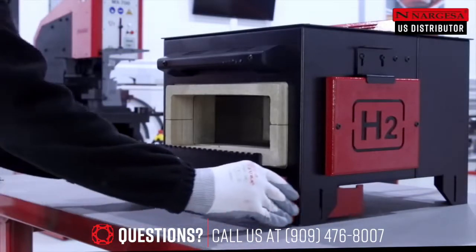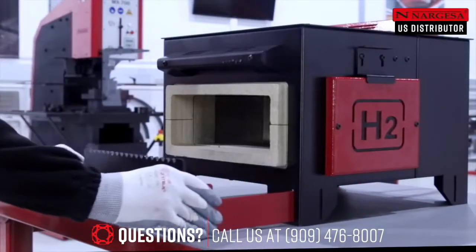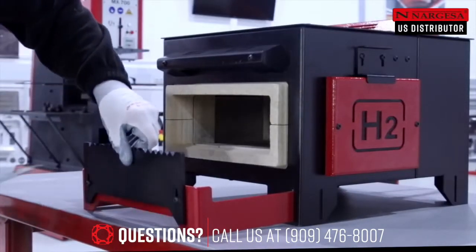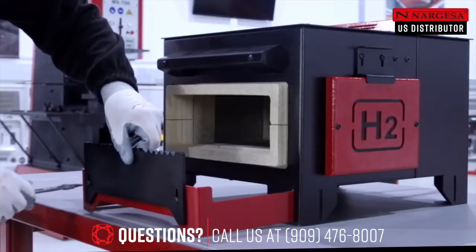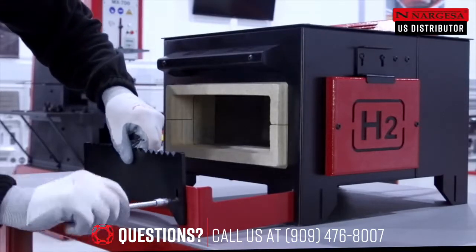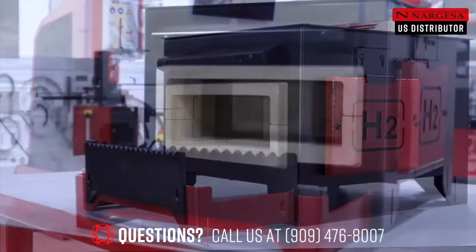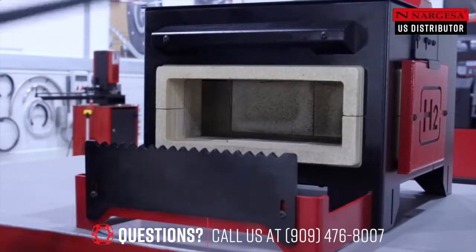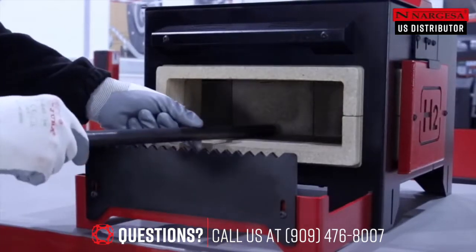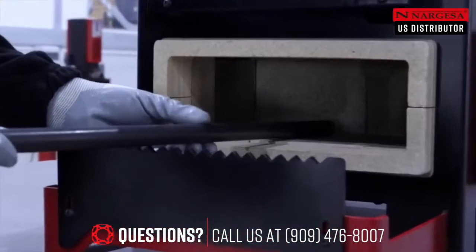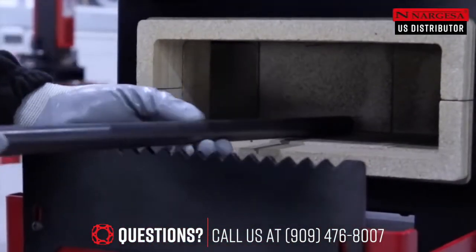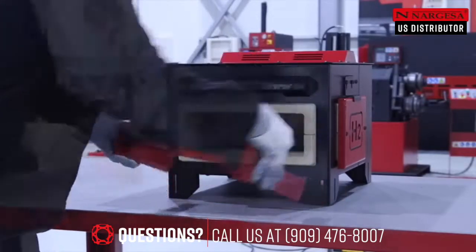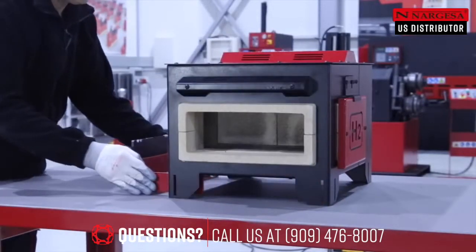The furnace has an auxiliary support for the parts to be heated, which can be adjusted in length and height. This support element has been designed pyramidal-toothed to avoid the lateral displacement of the pieces. It can also be exchanged and placed in any of the furnace doors as required by the operator.